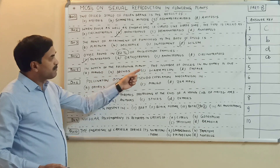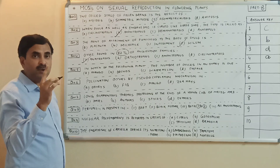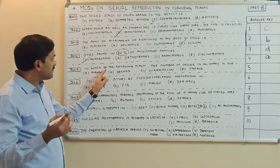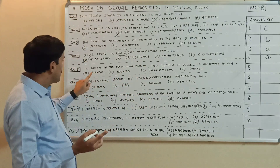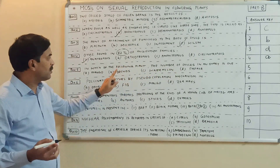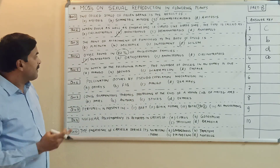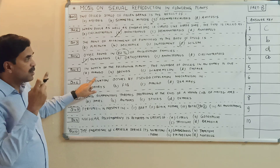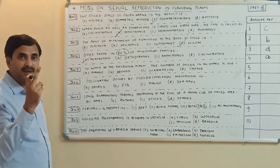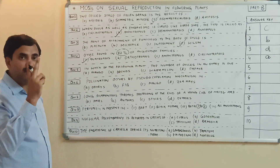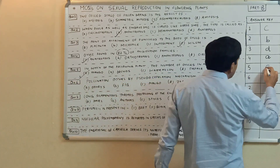In which of the following plants is the number of ovules in an ovary one? An ovary may have one ovule or more than one ovule. The options are mango, orchids, watermelon, and papaya. Orchids, watermelon, and papaya have many ovules in the ovary, but mango has only one ovule in an ovary. Question number five, answer is A.